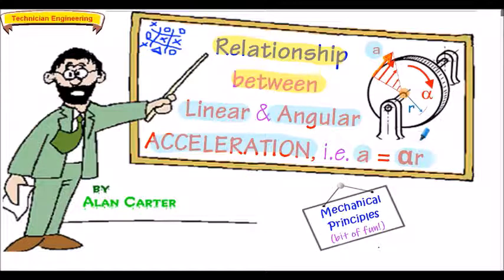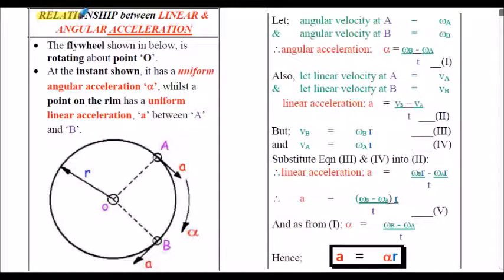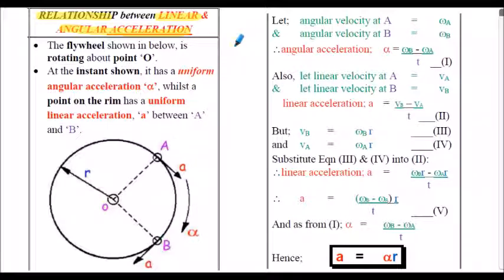In other words, the larger the radius from the center of the disc, the larger the linear acceleration. But the angular acceleration is assumed constant. Here's the relationship between linear and angular acceleration — a very standard proof taken from a textbook. I'll overview the steps involved and how the final equation is derived.